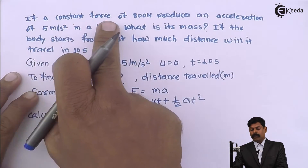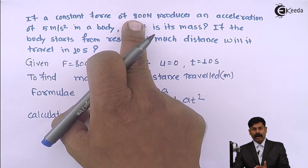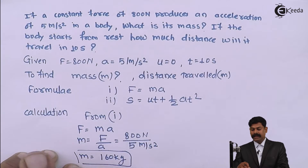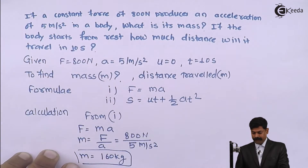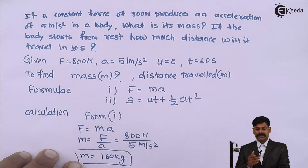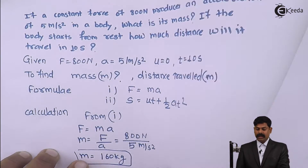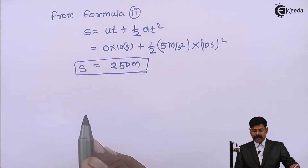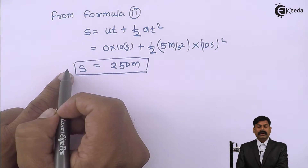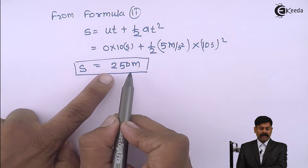When a force of 800 newton is applied to a body and the body accelerates with 5 meter per second square, then to sustain that force the mass of the body should be 160 kg. And because of the 800 newton force, the body will travel a distance of 250 meters.